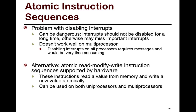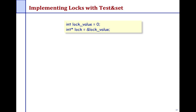Atomic sequence operations can be used in both multi-core and single-core systems. Now we're going to take a look at how you would implement locks using a test-and-set instruction. We already looked at the semantics of test-and-set; let's look at how you would implement it in a program.